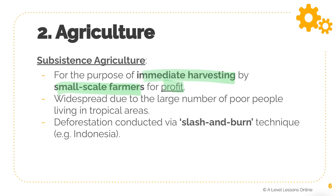Subsistence agriculture differs in that small-scale farmers harvest for their own use or sell locally to neighbors rather than on the global market. This is widespread due to the large number of poor people living in tropical areas. Deforestation here is usually conducted via slash and burn — slashing the forest and burning off the remaining parts. Wood burns easily, especially with abundant oxygen, and fires can spread very fast and burn for long periods.